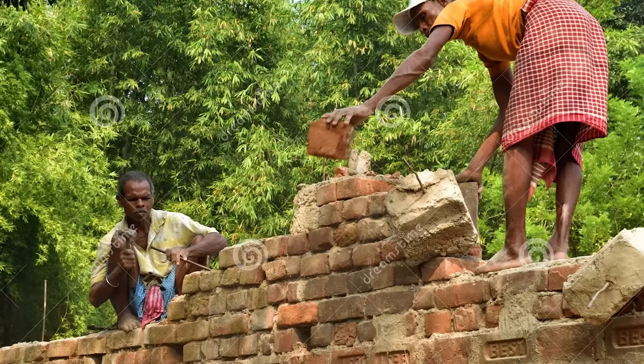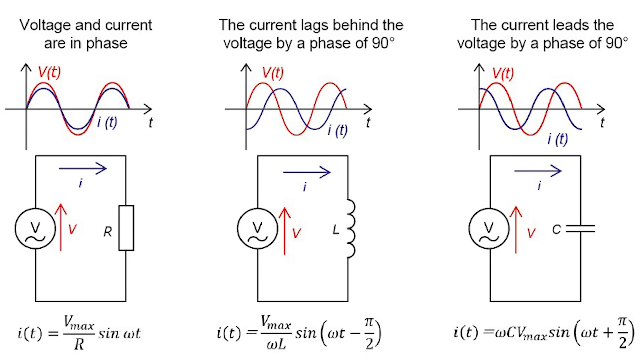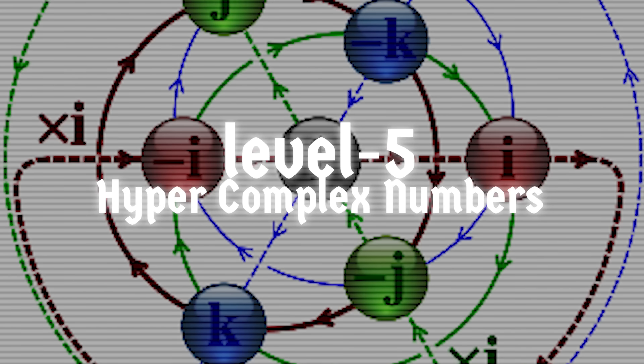You might think it's all make-believe at this stage, but engineers actually use imaginary numbers to calculate voltage and current when they're out of phase. Level 5: hyper complex numbers.